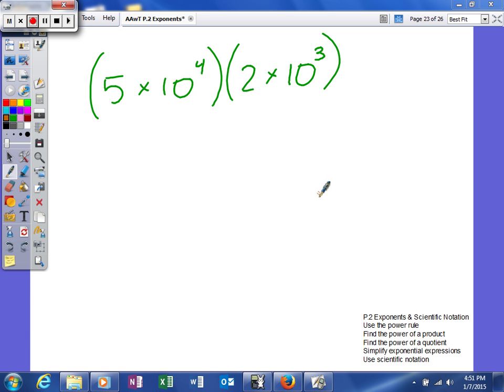Next we're going to look at some operations with scientific notation. As you can see we have two numbers in scientific notation and we're asked to multiply those together. We're going to use the exact same rules we used before.